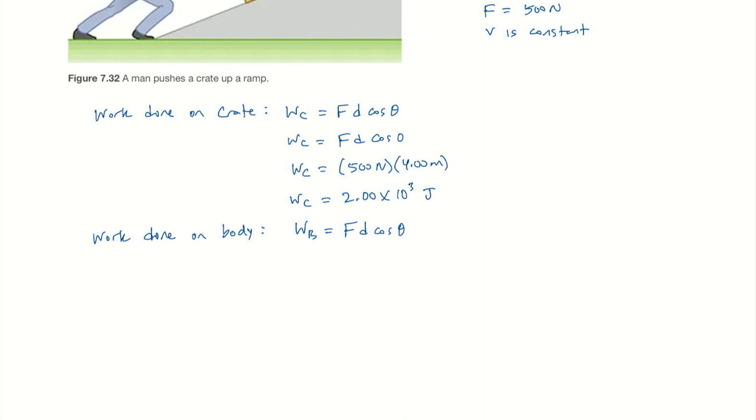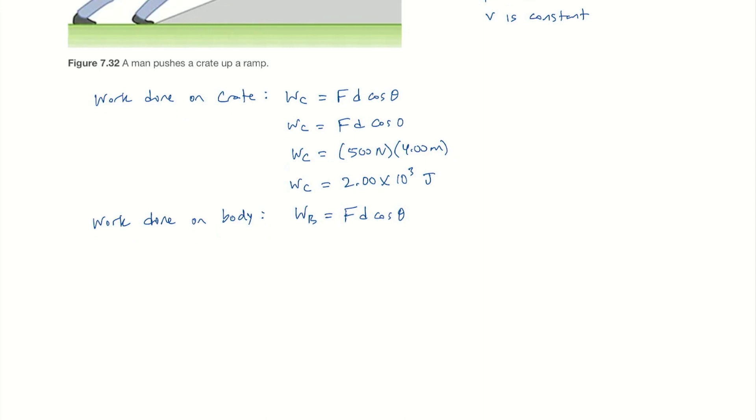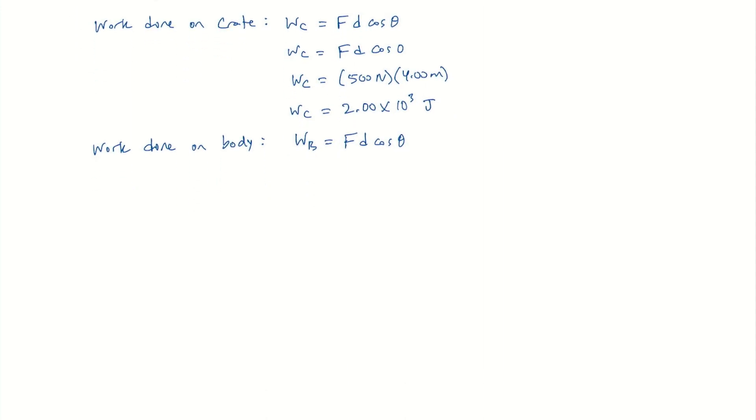Let's draw a free body diagram. So we have the ramp. We'll make our X and Y. Here's the body, it's a dot. So we have a weight that is straight down.